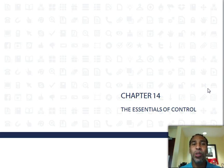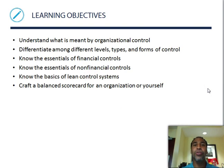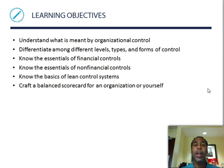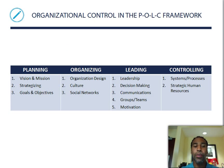Hello class, this is Demetrius Wilson with Principles of Management, Chapter 14. We will be speaking about the essentials of control. Learning objectives: understand what is meant by organizational control, differentiate among different levels, types, and forms of control, know the essentials of financial controls, know the essentials of non-financial controls, know the basics of lean control systems, and craft a balanced scorecard for an organization and for yourself.